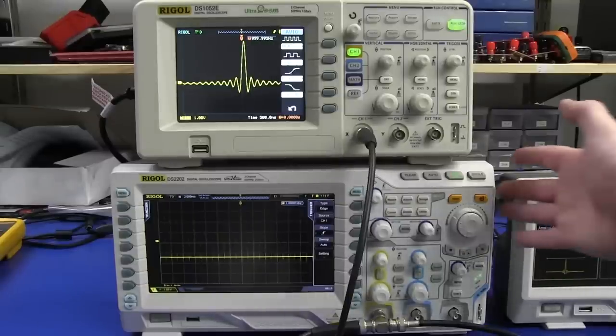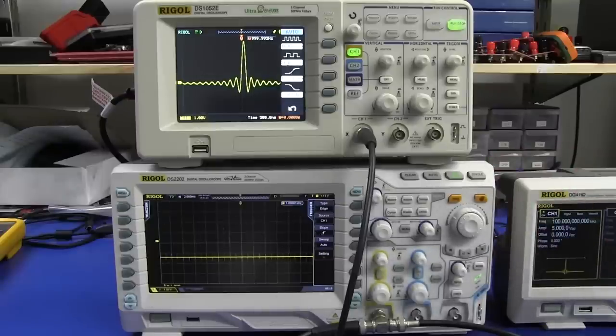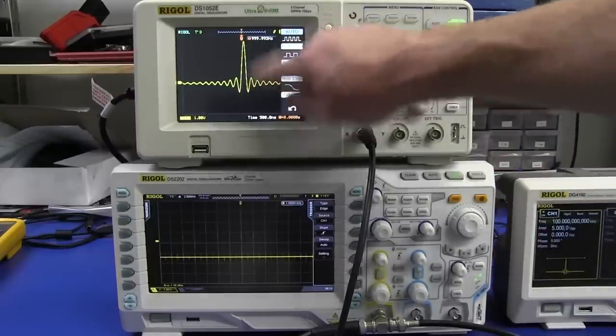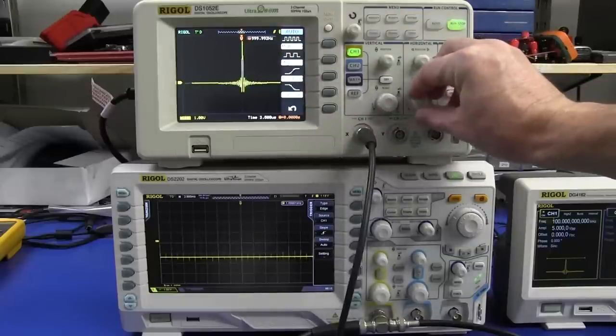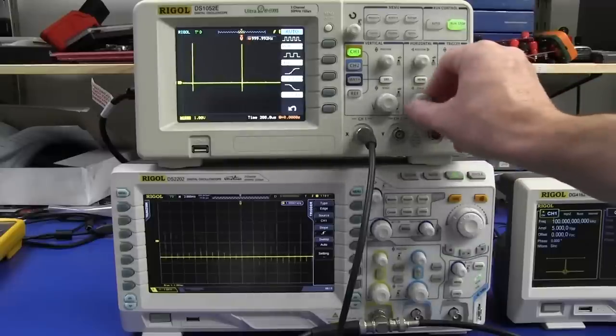If we zoom in on the same waveform here with 1 meg points, look at that. It's just all crusty. It doesn't have the memory depth capable of displaying that fine detail when you zoom in.